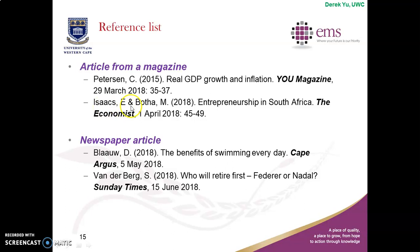A second example: Isaacs and Boiter — 'Entrepreneurship in South Africa' — the name of the magazine is The Economist, this issue released on 1st of April 2018, colon, then the pages — five pages in total, from 45 to 49. Same format applies if the article comes from a newspaper instead of a magazine.